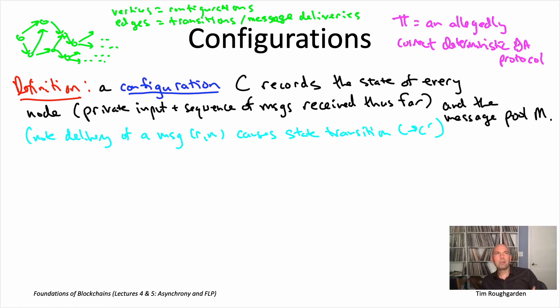So when we say that our plan is to show that this allegedly correct protocol π actually might never terminate, really what we're looking to do is exhibit an infinite path in this directed graph, so the adversary will be able to deliver messages forever without ever halting.